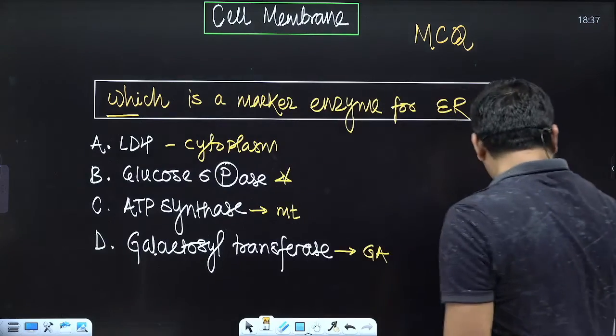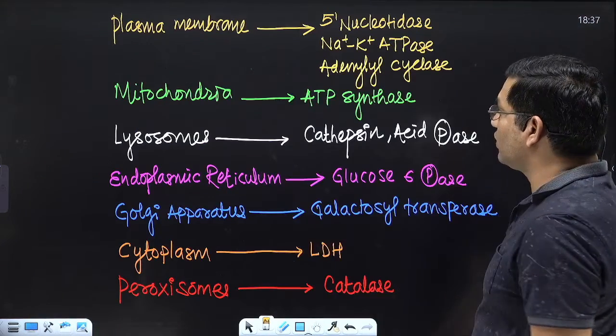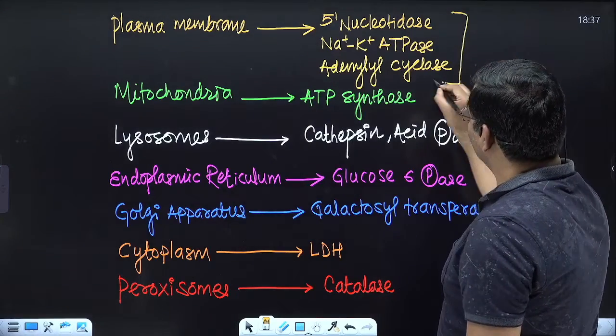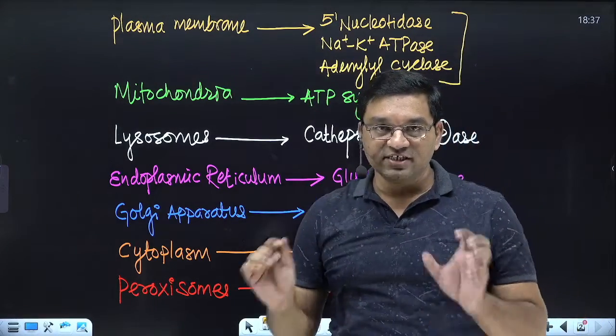Now see the different marker enzymes for different cellular organelles. For plasma membrane, 5' nucleotidase, sodium potassium ATPase and adenyl cyclase.